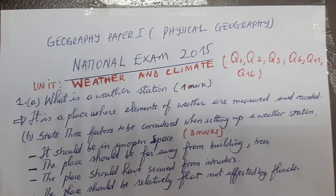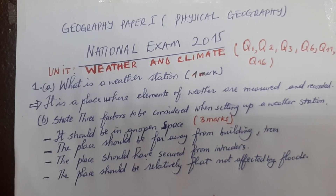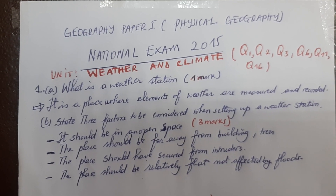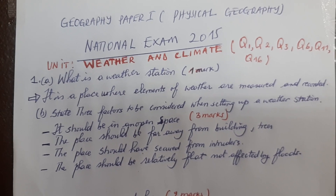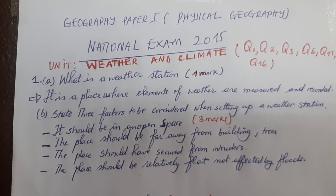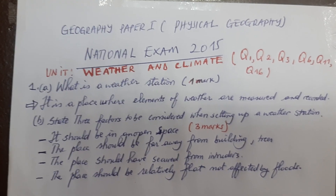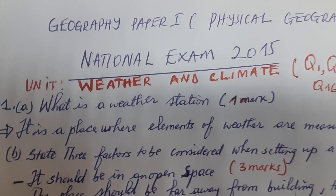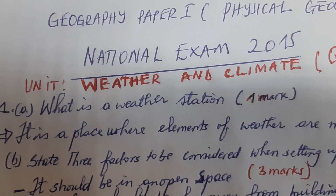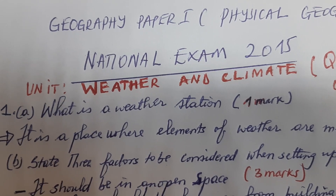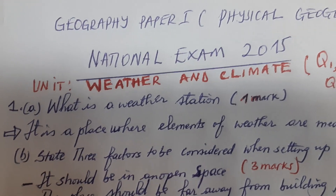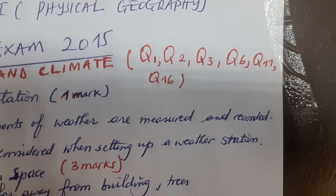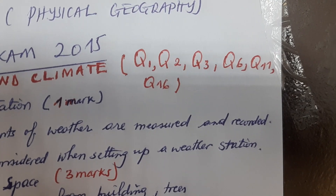Welcome again to this episode of Physical Geography, where today we are going to focus on different questions asked in the national exam. Today we are going to start with unit number one, which is weather and climate. On this unit of weather and climate, they have asked six questions in the national exam.